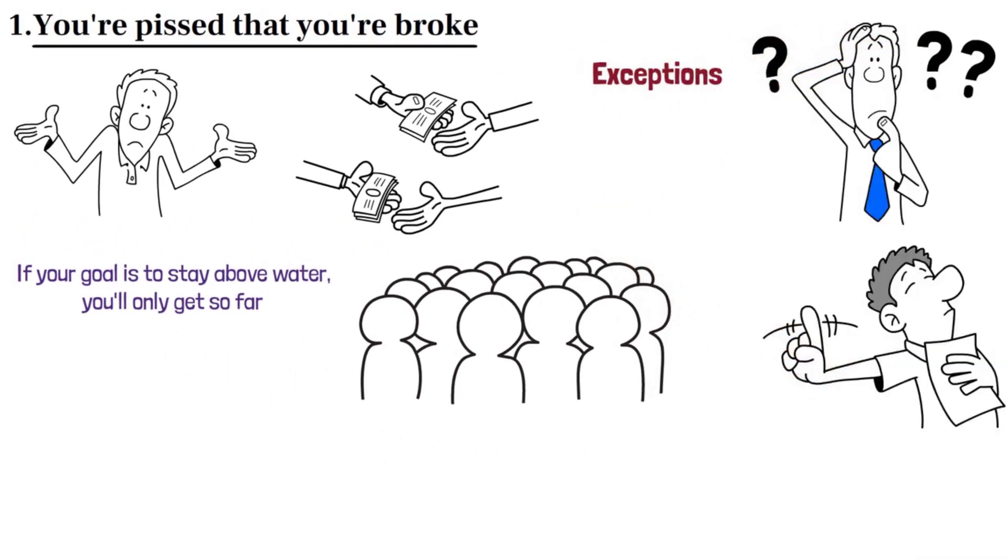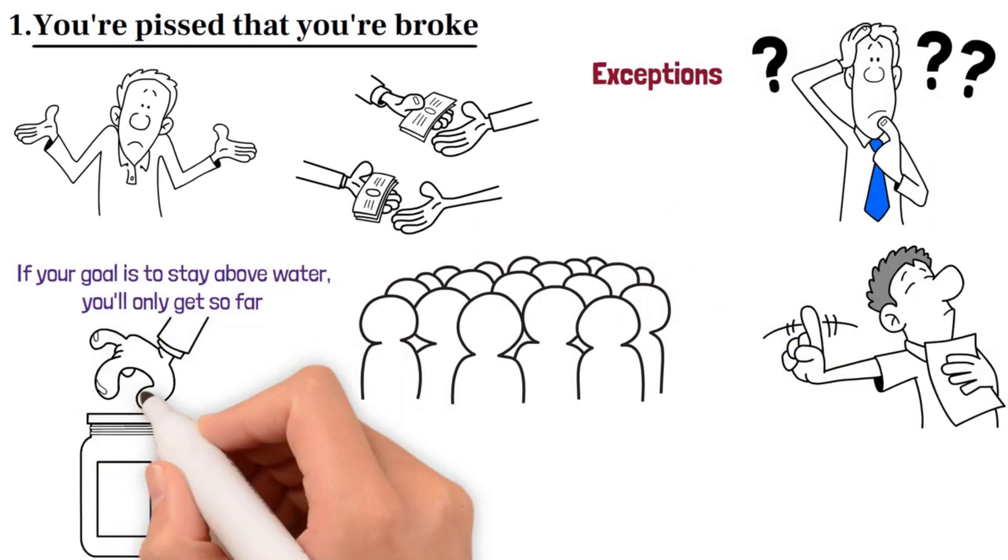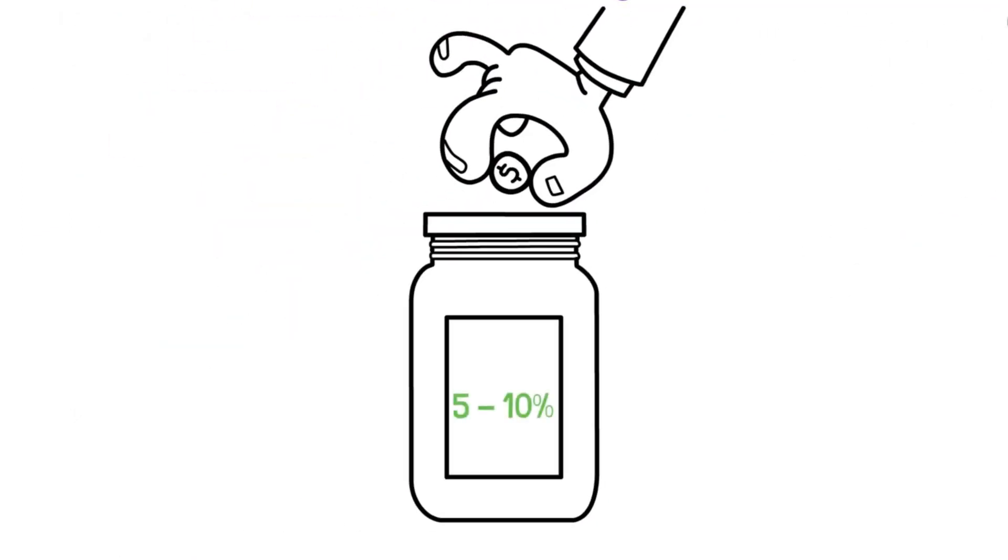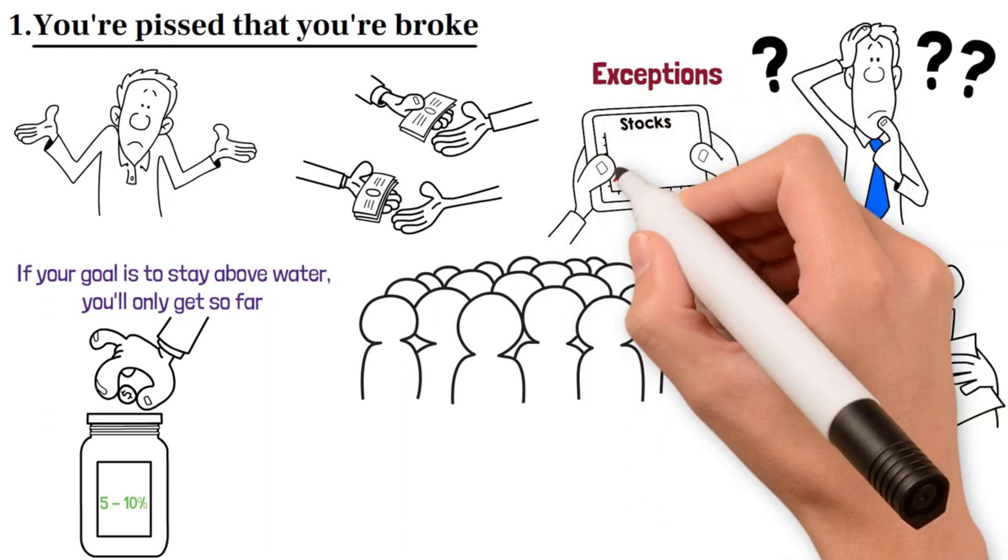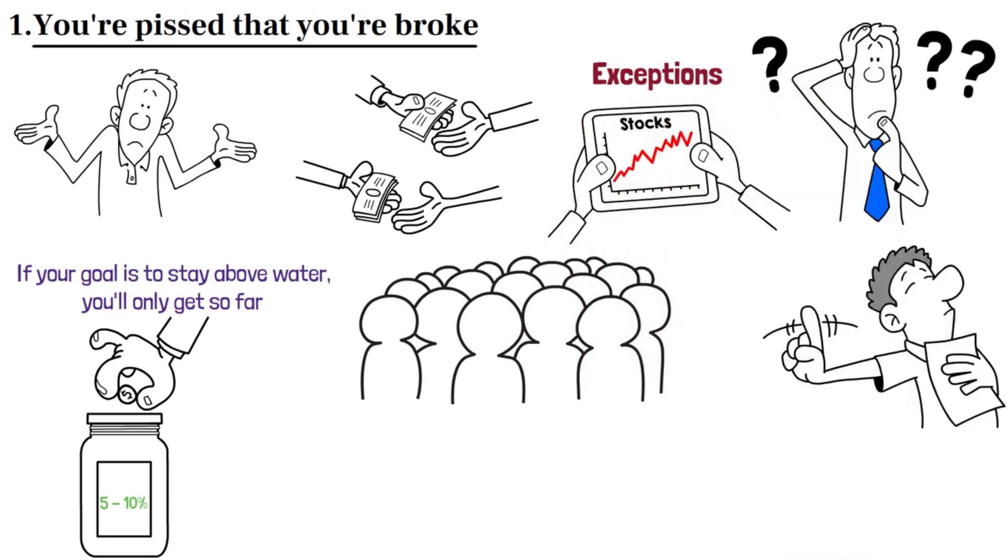There are, of course, exceptions. Some people save 5-10% of their earnings, invest in the stock market and hope for a 6-7% increase in their portfolio. So that when they are elderly, they will have something on which to rely. And it is preferable to nothing.